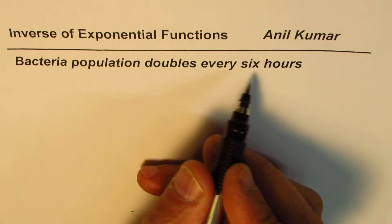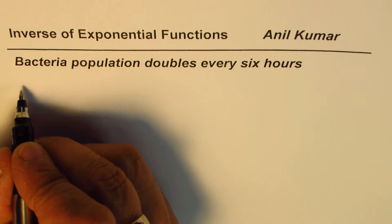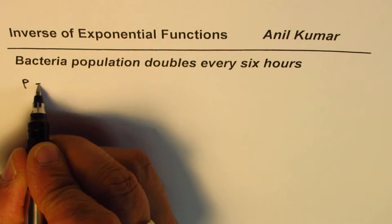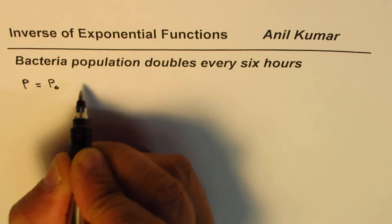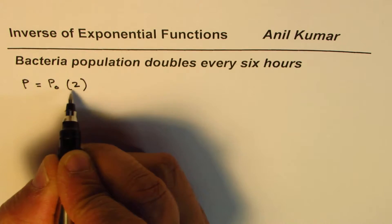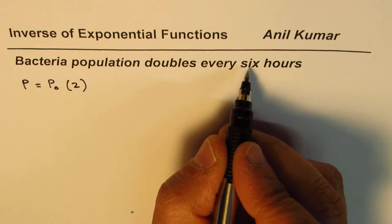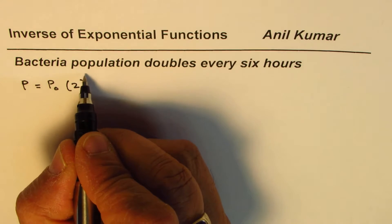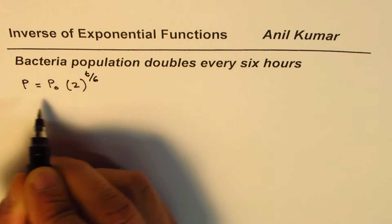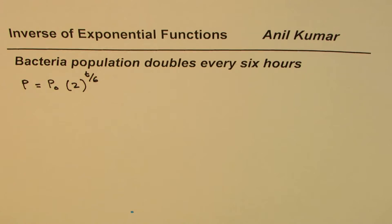When you say bacteria population doubles every six hours, we can write this in the form of an equation. Population could be initial population times two to the power of t over six, where six hours is the doubling time. So this particular equation gives us population of bacteria after t hours.